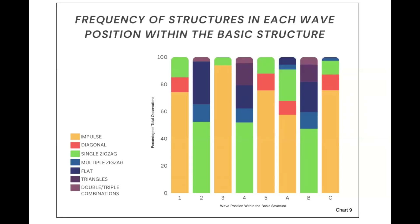Also included in the paper is the frequency of structures in each wave position for every market combined. In waves 1, 3, and 5, impulse waves are by far the most common in those positions. For our own analysis at Pure Elliott Wave, we've broken this up into each market individually and use those frequencies in our analysis every day.